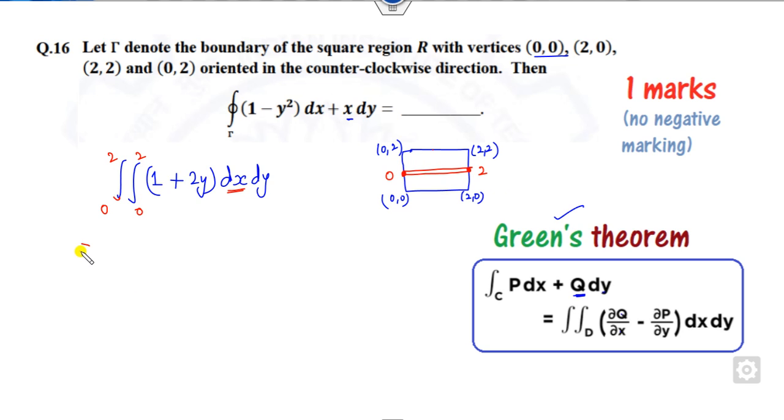This is integration with respect to x. This is constant with respect to the integration, so this is 1 + 2y, and the constant limit is 2 - 0, which is 2.